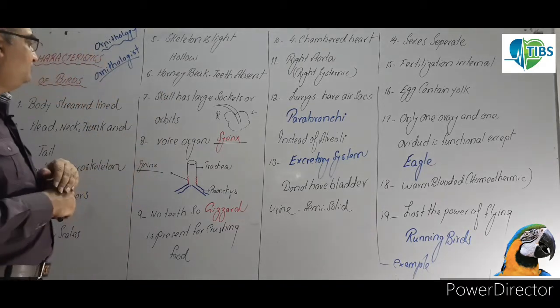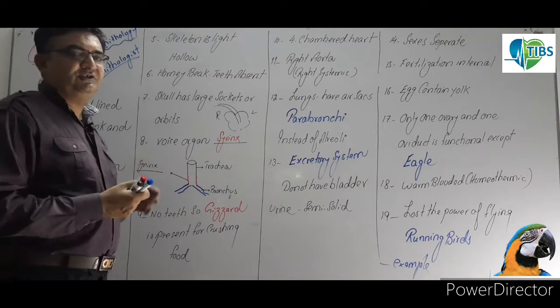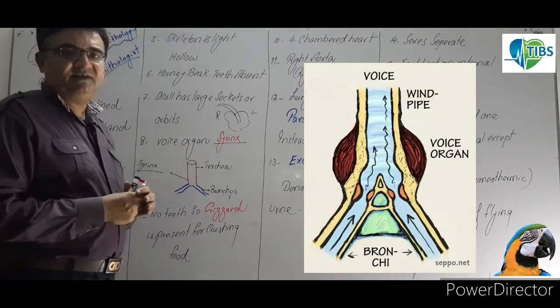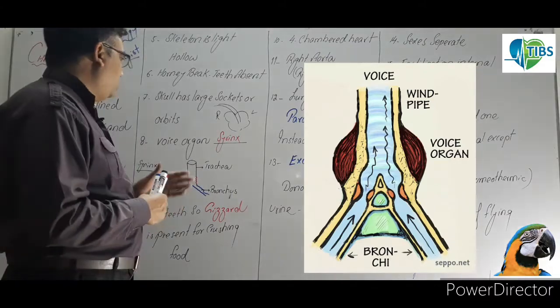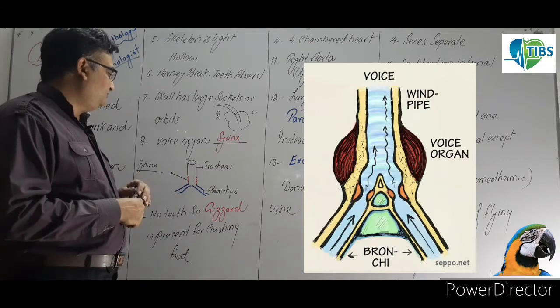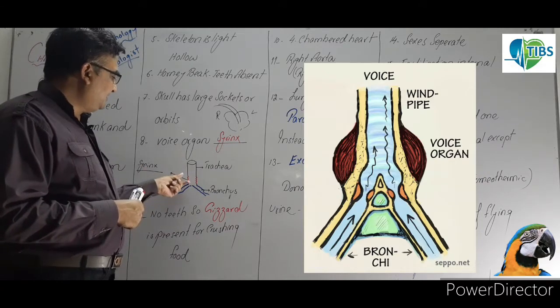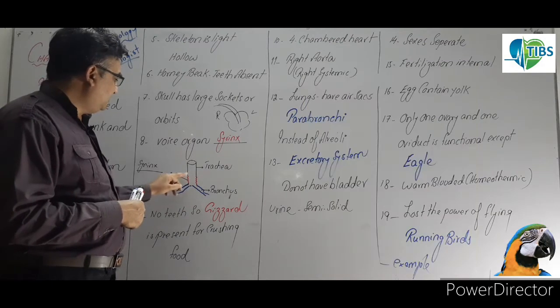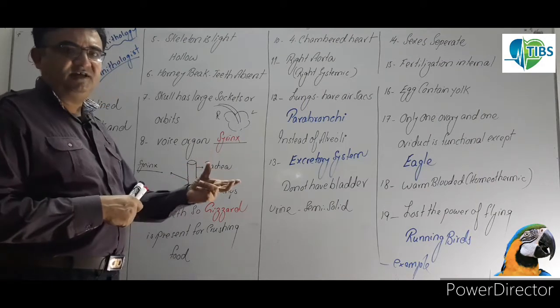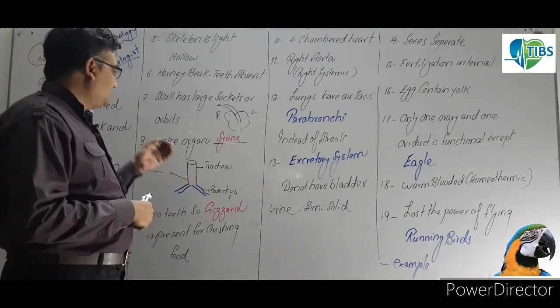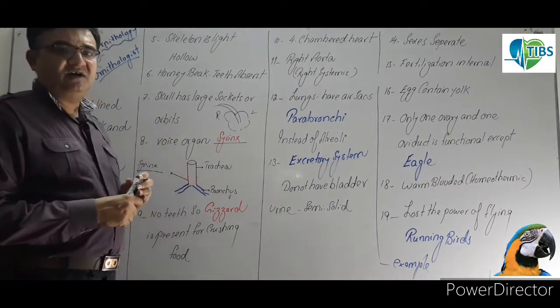Very important MCQ: voice producing organ which we call syrinx. Often comes in board exams. And syrinx, if we ask about its location, it is found at the junction of bronchi and trachea. Where I've shown in red color, this is syrinx. Because of this they can produce beautiful sounds.